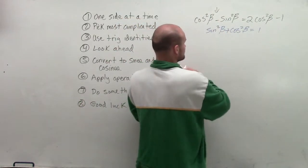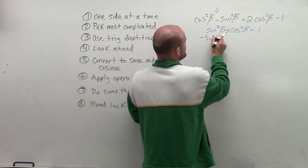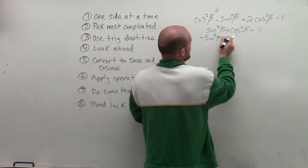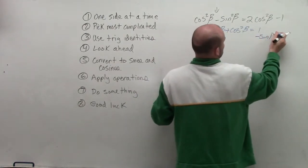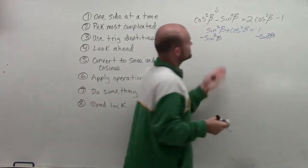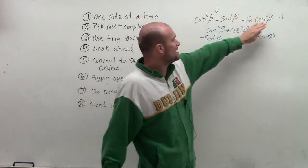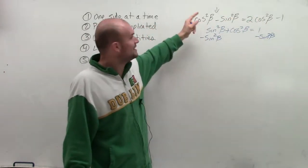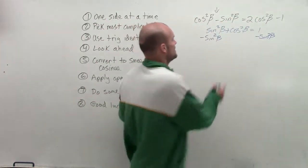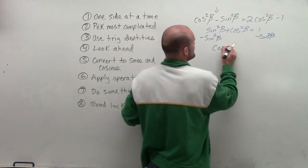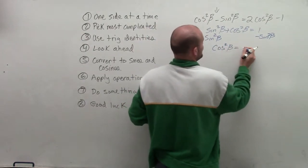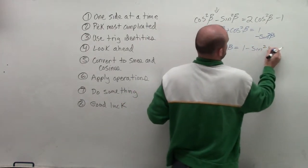So by doing that, I'm going to solve for sine squared of beta on both sides. All right? And that's the reason why it's important for you to look ahead and see what is it you want to solve for. If you want to get the left side to look like the right side, you don't want to convert cosine to sine. You want to convert sine to cosine. So therefore, I'm now going to have cosine squared of beta equals 1 minus sine squared of beta.